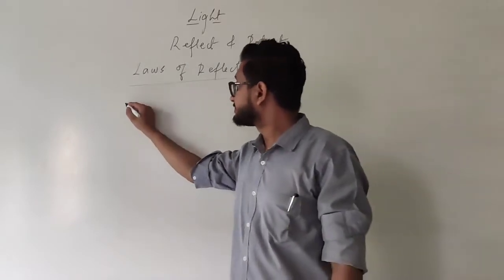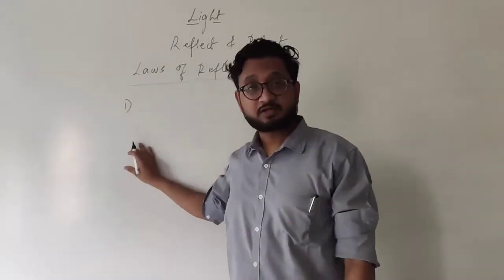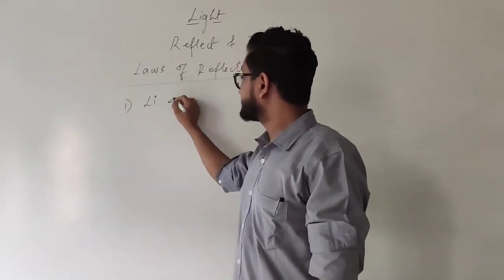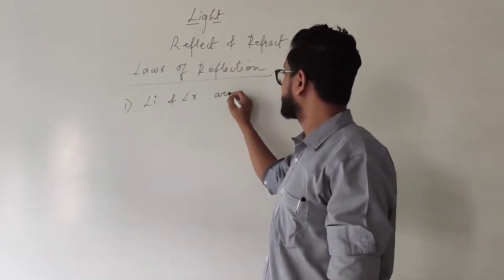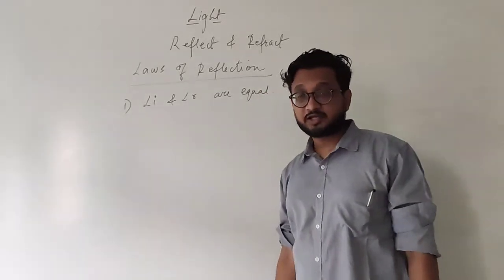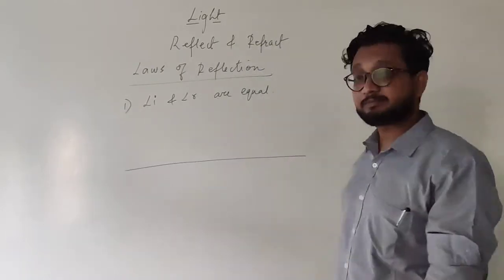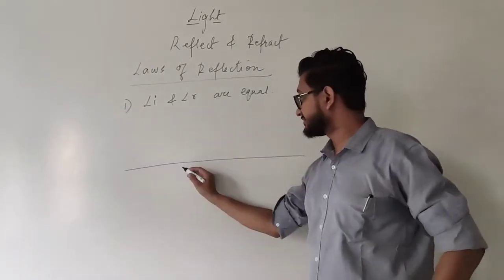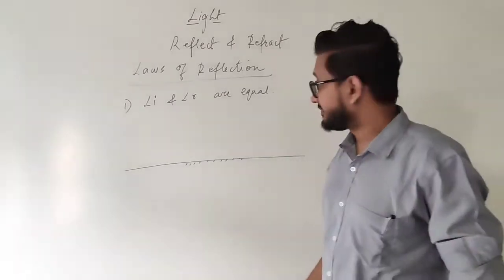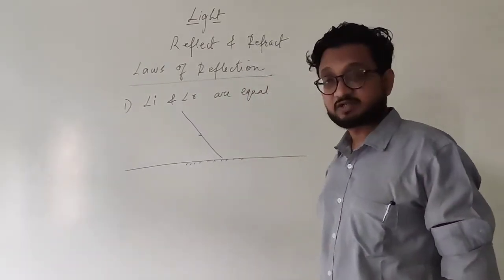Laws of reflection — first one: the angle of incidence and the angle of reflection are the same. To understand this, we will draw a plane mirror, or a smooth surface, and imagine an incident ray falling on this surface.